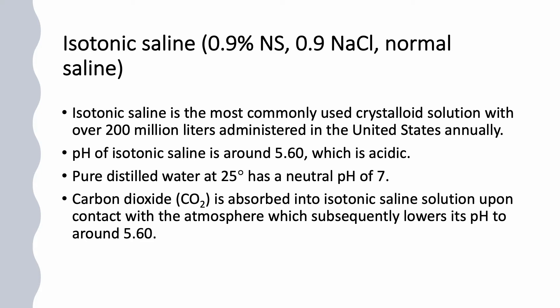Isotonic saline, also known as 0.9 normal saline or normal saline, is the most commonly used crystalloid solution. Over 200 million liters are used annually in the U.S. The pH is 5.6, so it is acidic. Pure distilled water at 25 degrees has a neutral pH of 7, but upon contact with the atmosphere, carbon dioxide is absorbed and the pH is lowered to around 5.6, with some variation between solutions.